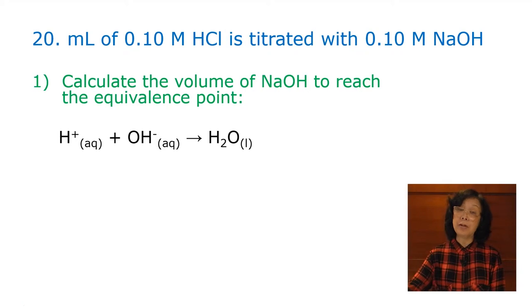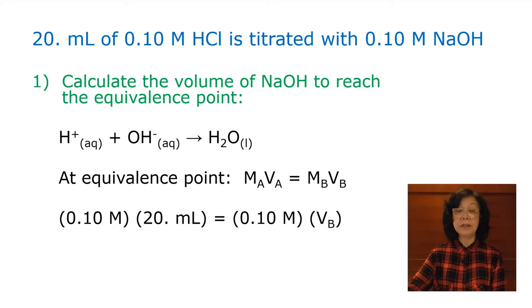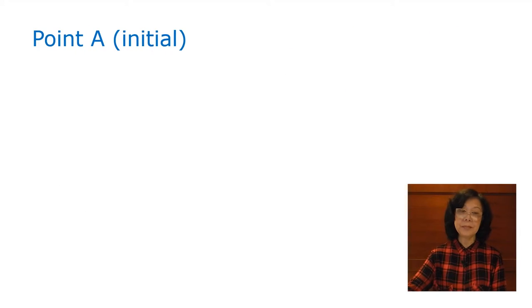Write the net ionic equation. You have the hydrogen ion and the hydroxide ion to make water. At the equivalence point, we use the formula MAVA equals MBVB. Since we know it's 0.1 molar HCl 20 milliliter and 0.1 molar NaOH, we can calculate the volume of NaOH added to reach the equivalence point, which in this case is 20 milliliter. Now, we are ready to do our titration calculation.